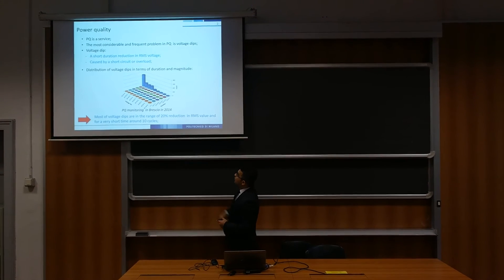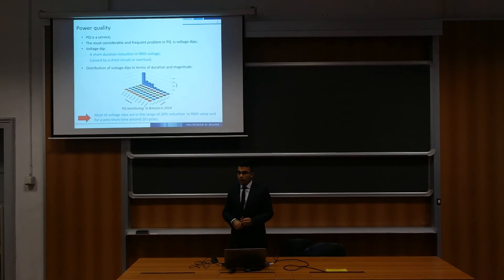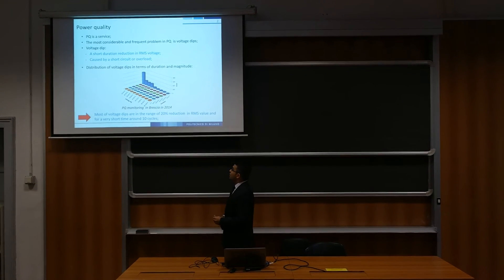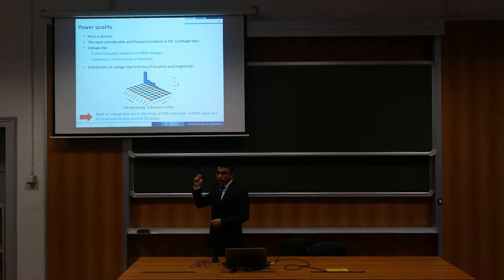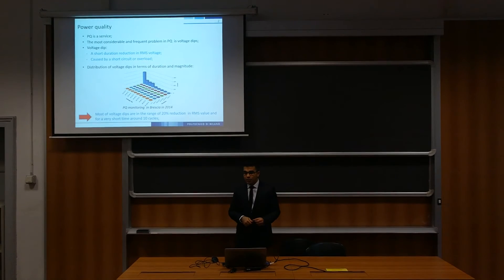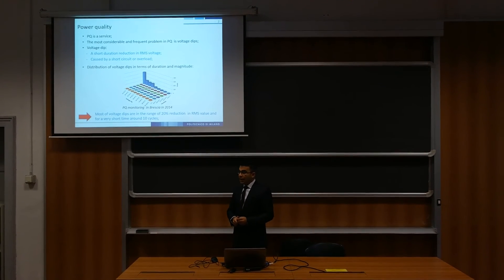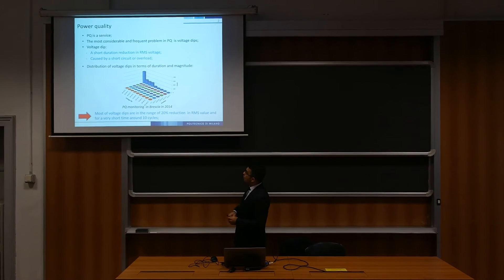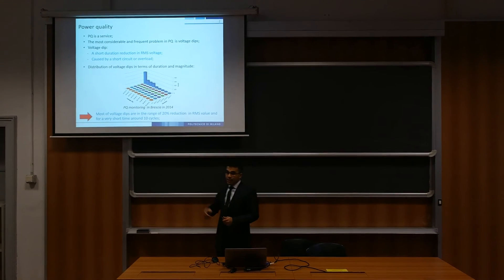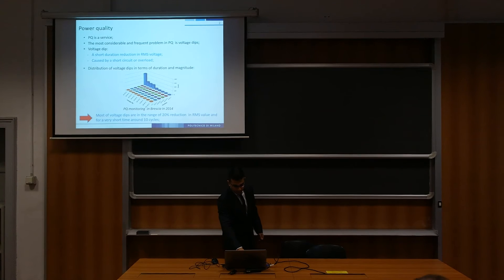In the graph, you can see the distribution of voltage dips in terms of duration and magnitude from a power quality survey in 2014 in city operation. As you can see, most of the voltage dips are in the range of 20% reduction in magnitude and for a very short time, around 10 cycles. More or less the same trend is observed in other power quality surveys.